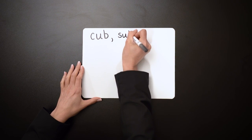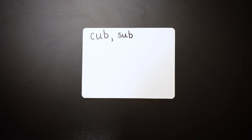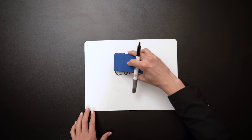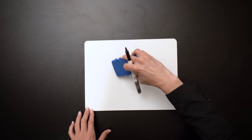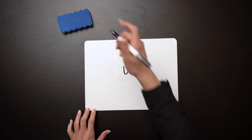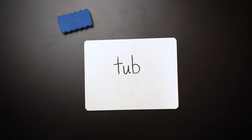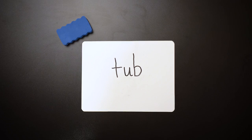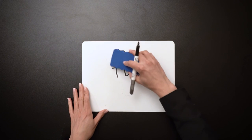You can even add in some great phonological awareness activities. Tell students: change the beginning sound in the word cub to T — what's the new word? Tub! Then have students write the word on their whiteboard. Now change the beginning sound in the word tub to R — what's the new word? Rub! Write it!